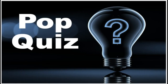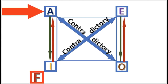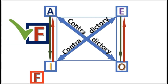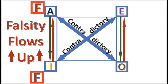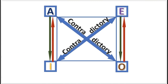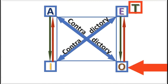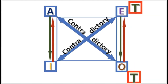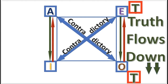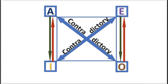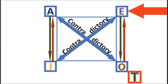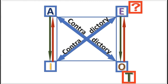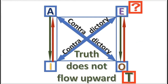Pop quiz: If I is false, what is A? The answer is: False — because falsity flows upward. Next practice problem: If E is true, what is O? The answer is: O is true — truth flows downward. Next practice problem: If O is true, what is E? The answer is: E is undetermined — truth does not flow upward.